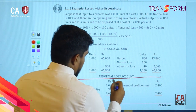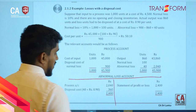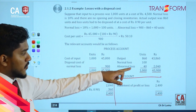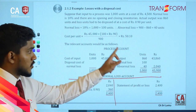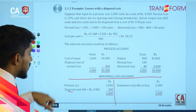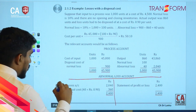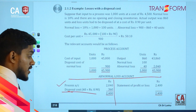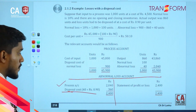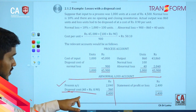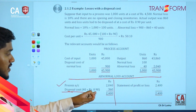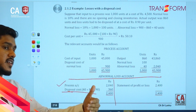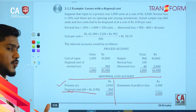For the abnormal loss account: credit the process account and debit the abnormal loss account. You also need to bring in the disposal cost related to the actual output units in the abnormal loss account.